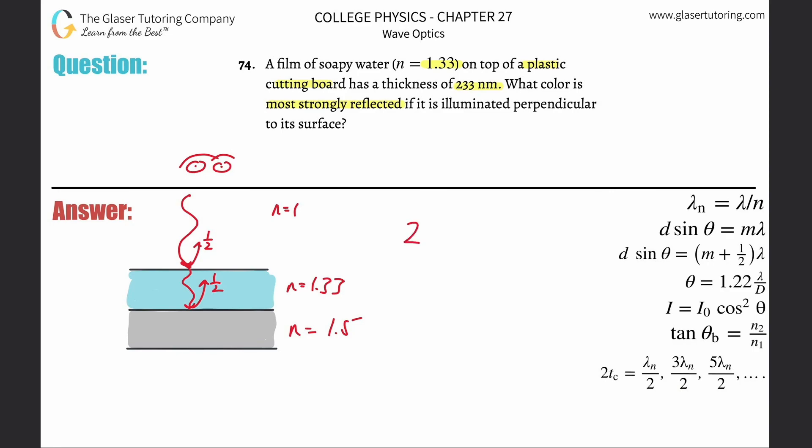We have to realize that two times the thickness of the soap bubble will equal λn over two. In other words, you basically have two phase changes here. You can add them together if you want—λn over two because you had two phase changes there. So this would then be λn, or the wavelength in the soapy water.